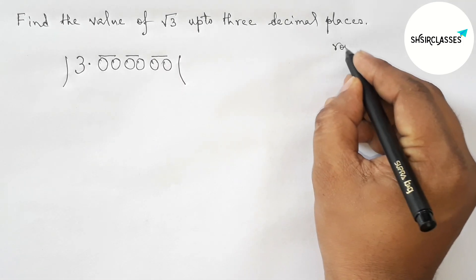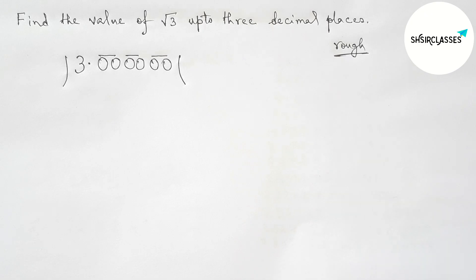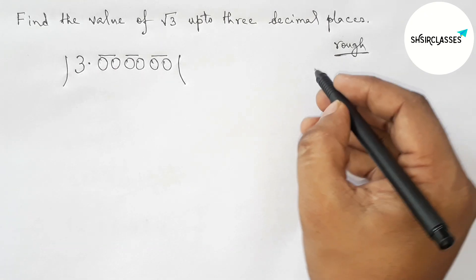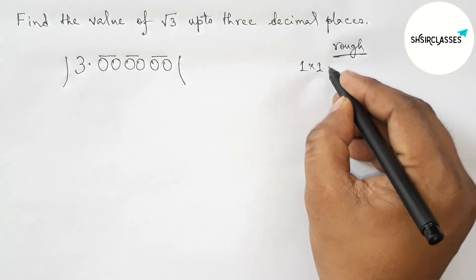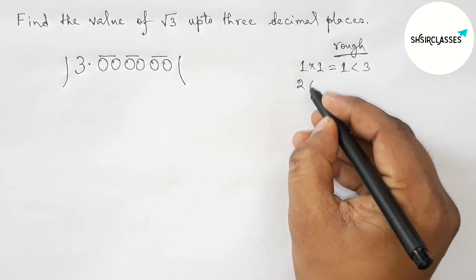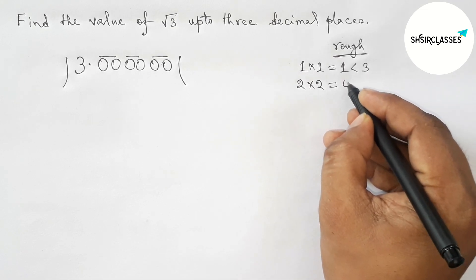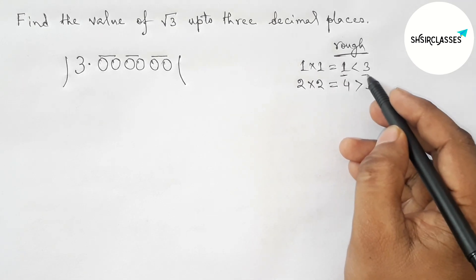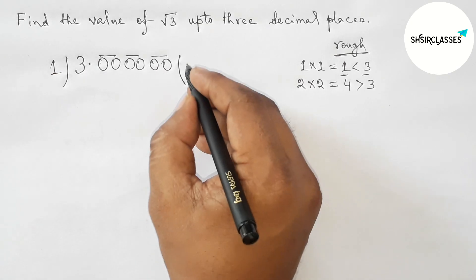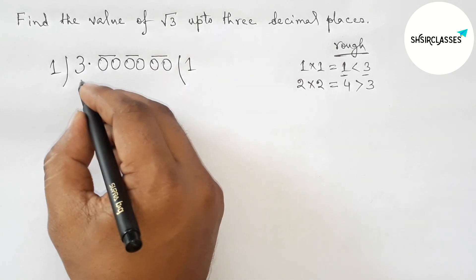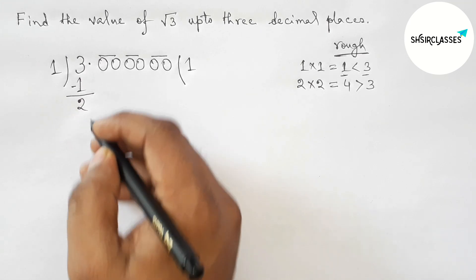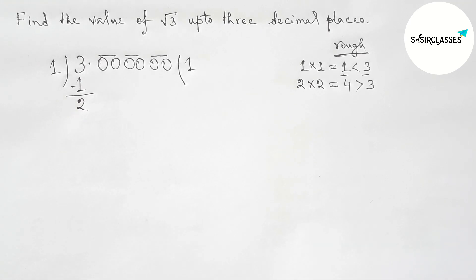Now, we have to choose a number and multiply it by itself such that the result is less than 3. Taking 1 and multiplying: 1×1=1, which is less than 3. If we take 2 and multiply: 2×2=4, which is greater than 3. So 1 is the perfect choice. Write 1 here: 1, 1, 0, 1. Subtracting gives remainder 2, and the decimal point goes here.